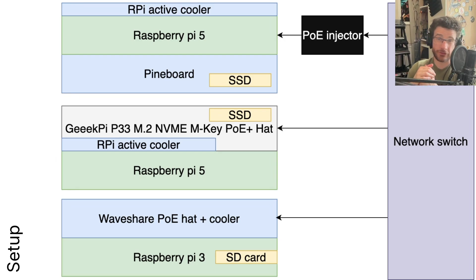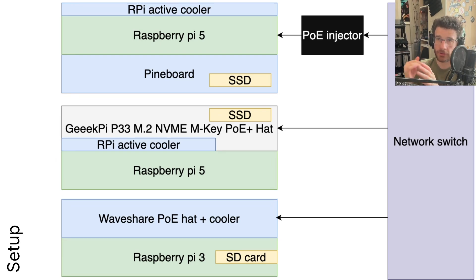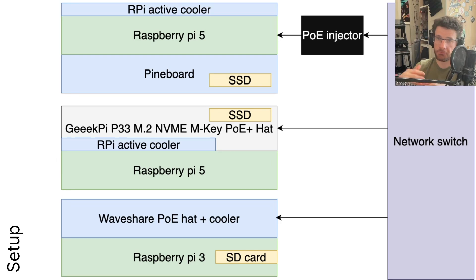And then finally, the Raspberry Pi 3, still running off SD card — I didn't really see the point in SSD-ing that at this time. It's got a simple WaveShare PoE hat and cooler on, and that works happily.